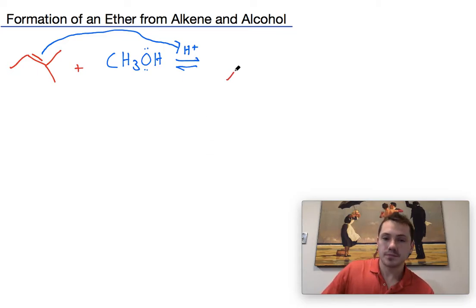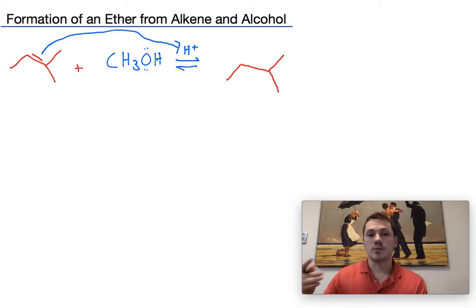So what we know in organic chemistry is reactions tend to proceed through the more stable intermediate. Because carbocations are more stable the more highly substituted they are, our carbocation in this case is going to want to be on the tertiary carbon instead of the secondary carbon.